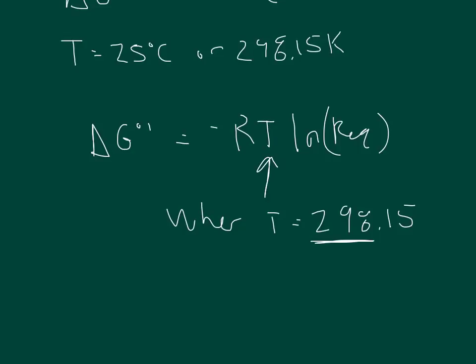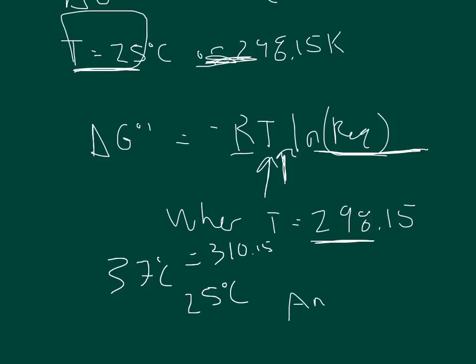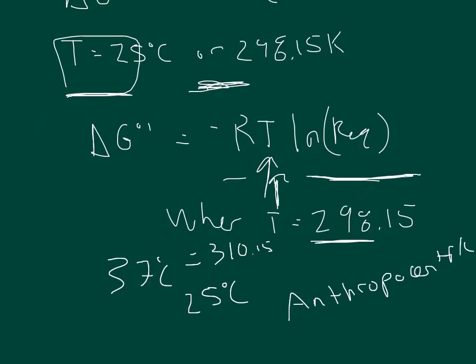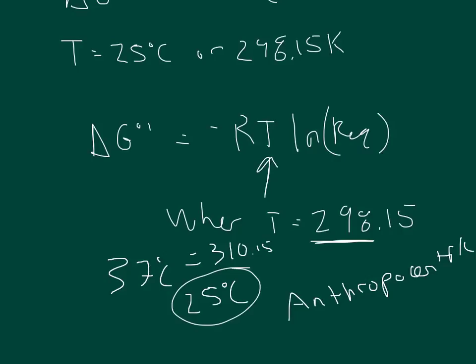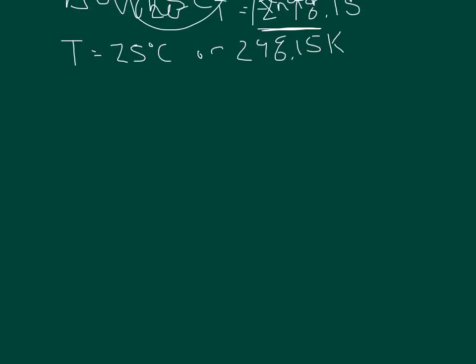You might immediately wonder: body temperature is roughly 37 degrees Celsius, so why is the standard state set at 25 degrees Celsius rather than 310.15 Kelvin? The answer is that biochemistry doesn't just pertain to humans — that would be anthropocentric thinking. Biochemistry applies to sea anemones, thermophilic bacteria on thermal vents, and countless other organisms, so 25 degrees — essentially room temperature — is used as the standard.